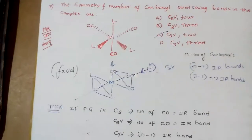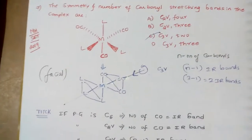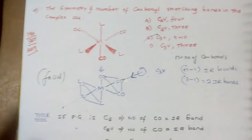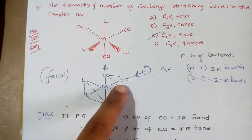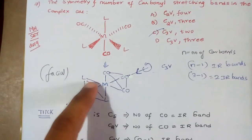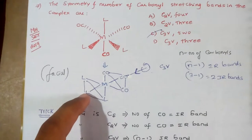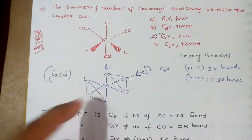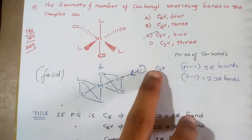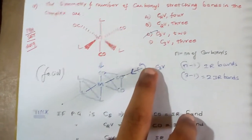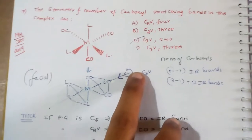In this structure, in this complex, these three CO groups are in one phase and three ligands are in another phase. So its point group — if you view from here — this point group is C3V.